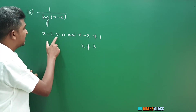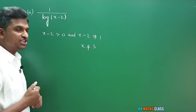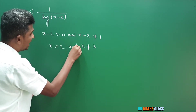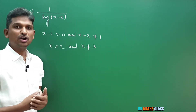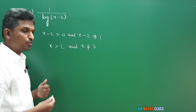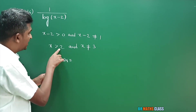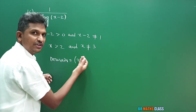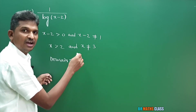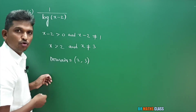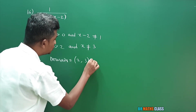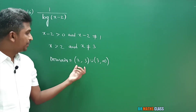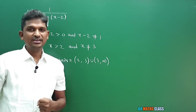From x-2 > 0, we get x > 2. We need values greater than 2 but not equal to 3. So the domain is the open interval (2, 3) union (3, infinity).